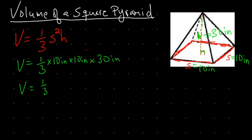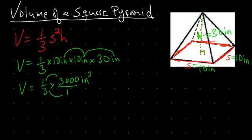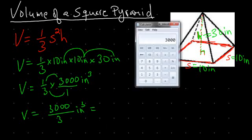So we have one-third times 3,000 cubic inches — volume is always going to be cubic. To multiply by the fraction, we multiply top times top and bottom times bottom: 1 times 3,000 is 3,000, divided by 3 times 1 is 3, giving us 3,000 divided by 3, which equals 1,000 cubic inches.